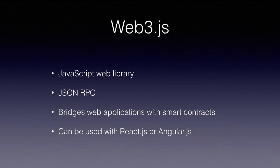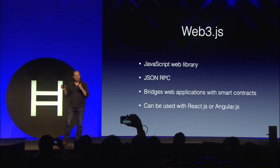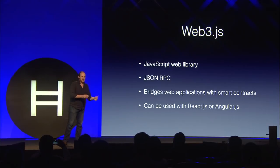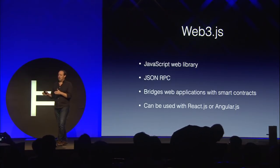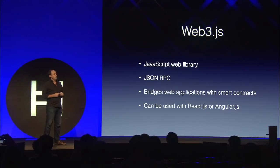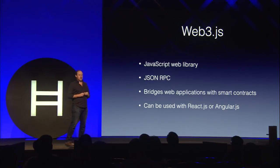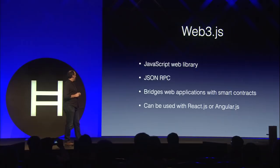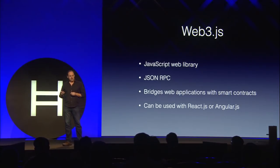Web3 is the bridge between client-side applications and smart contracts. Web3.js is the JavaScript library, but there are also implementations for Java, Python, and other languages. Web3.js uses the JSON-RPC protocol to make remote procedure calls on smart contracts, listen to contract events, and bridge web applications built with React or Angular. I hope this has given developers enough to get started and given non-technical people useful terminology around smart contracts and decentralized applications.